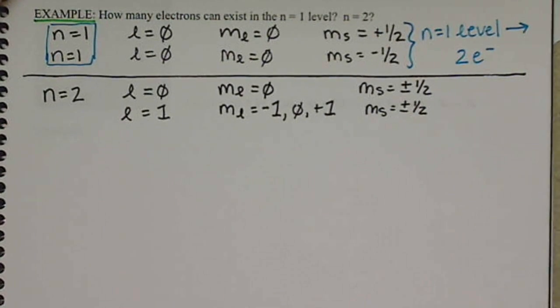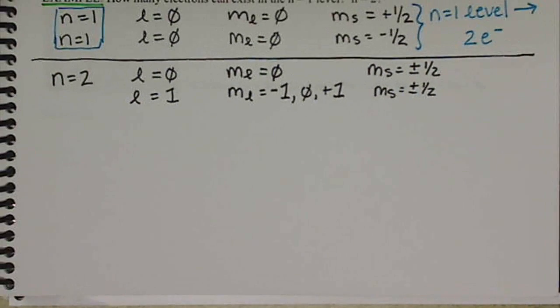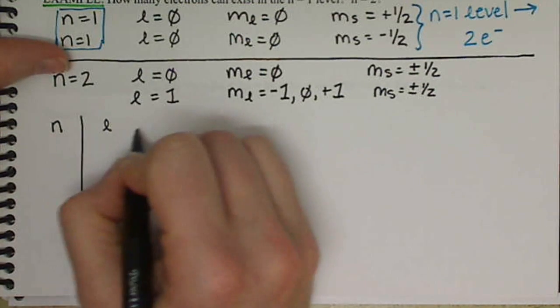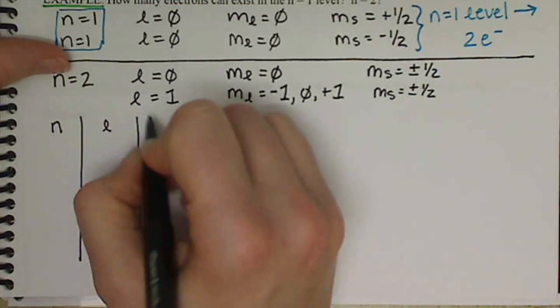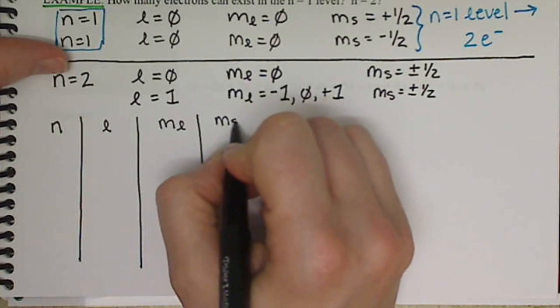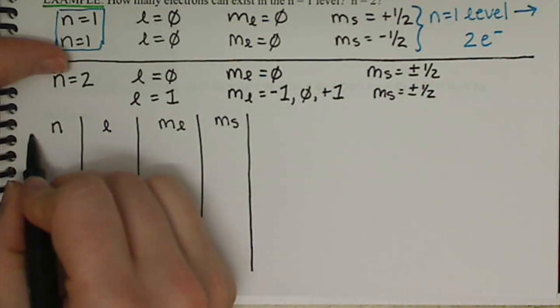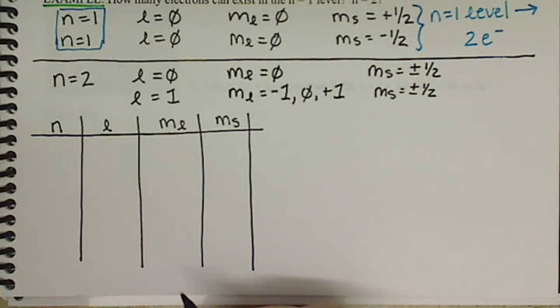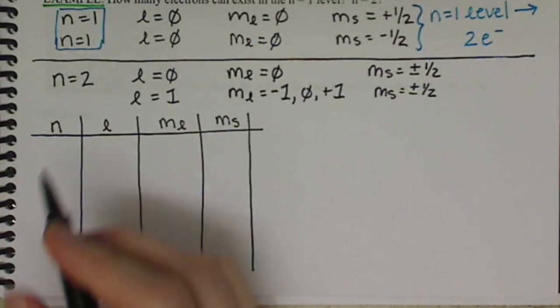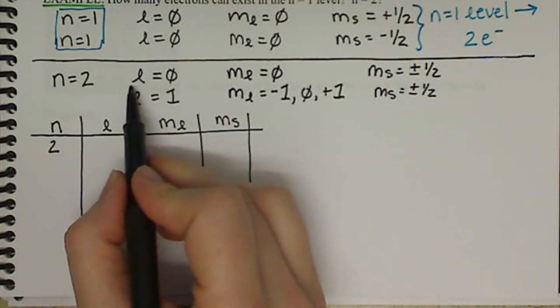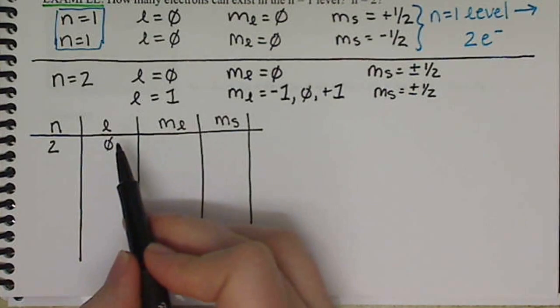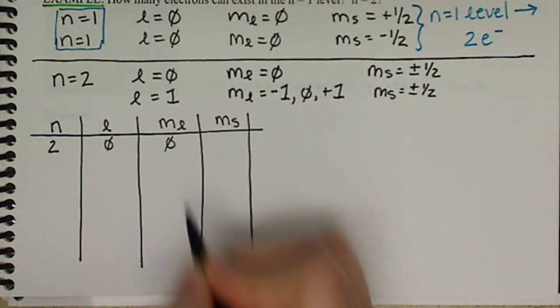So what we want to do is work ourselves out a table. So we have N, we have L, M sub L, and M sub S, and we'll work out how many we can have. So when N equals 2, we have L. We'll start with L equals 0, and we'll exhaust that value. So when L equals 0, M sub L can only equal 0.